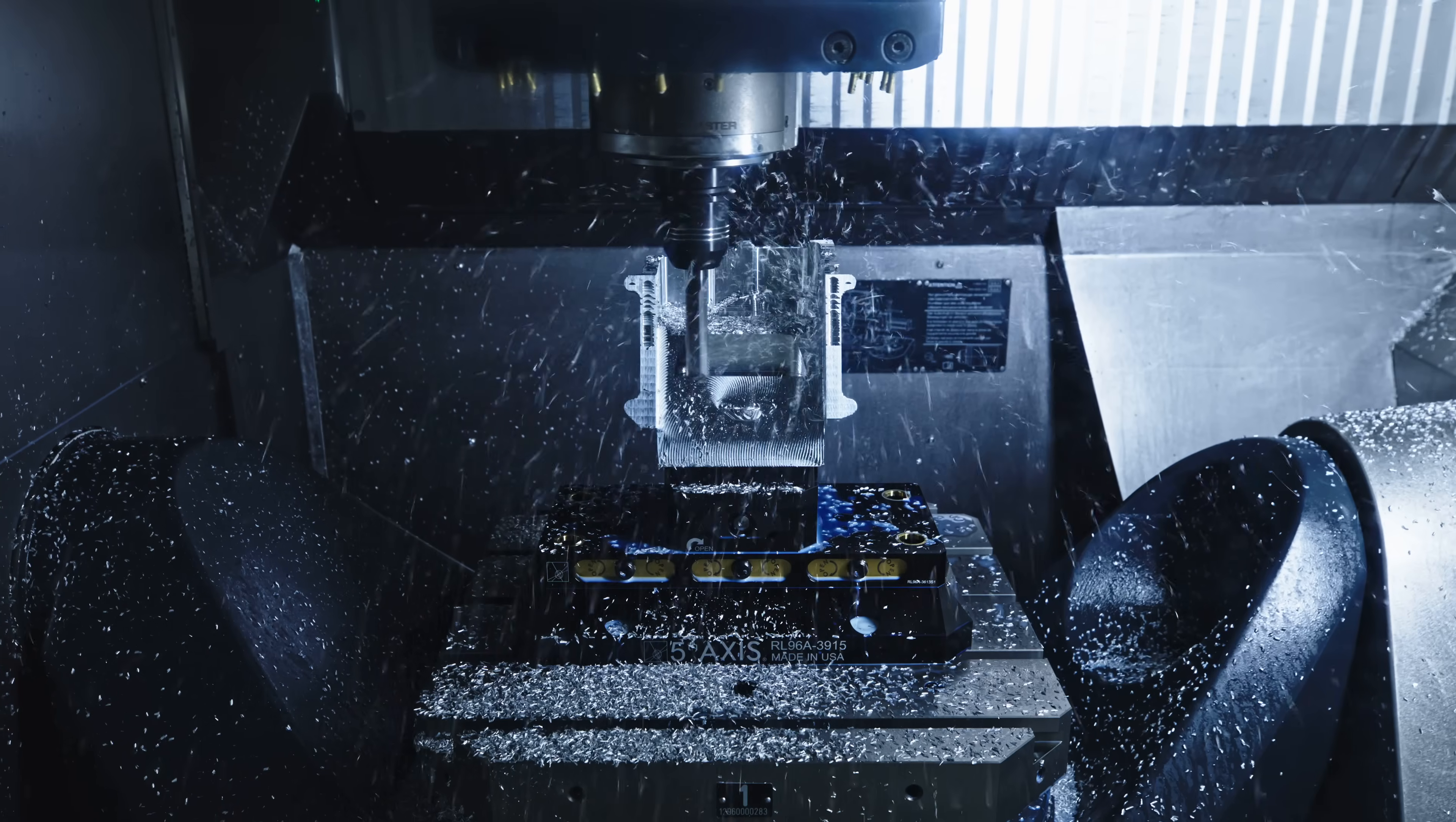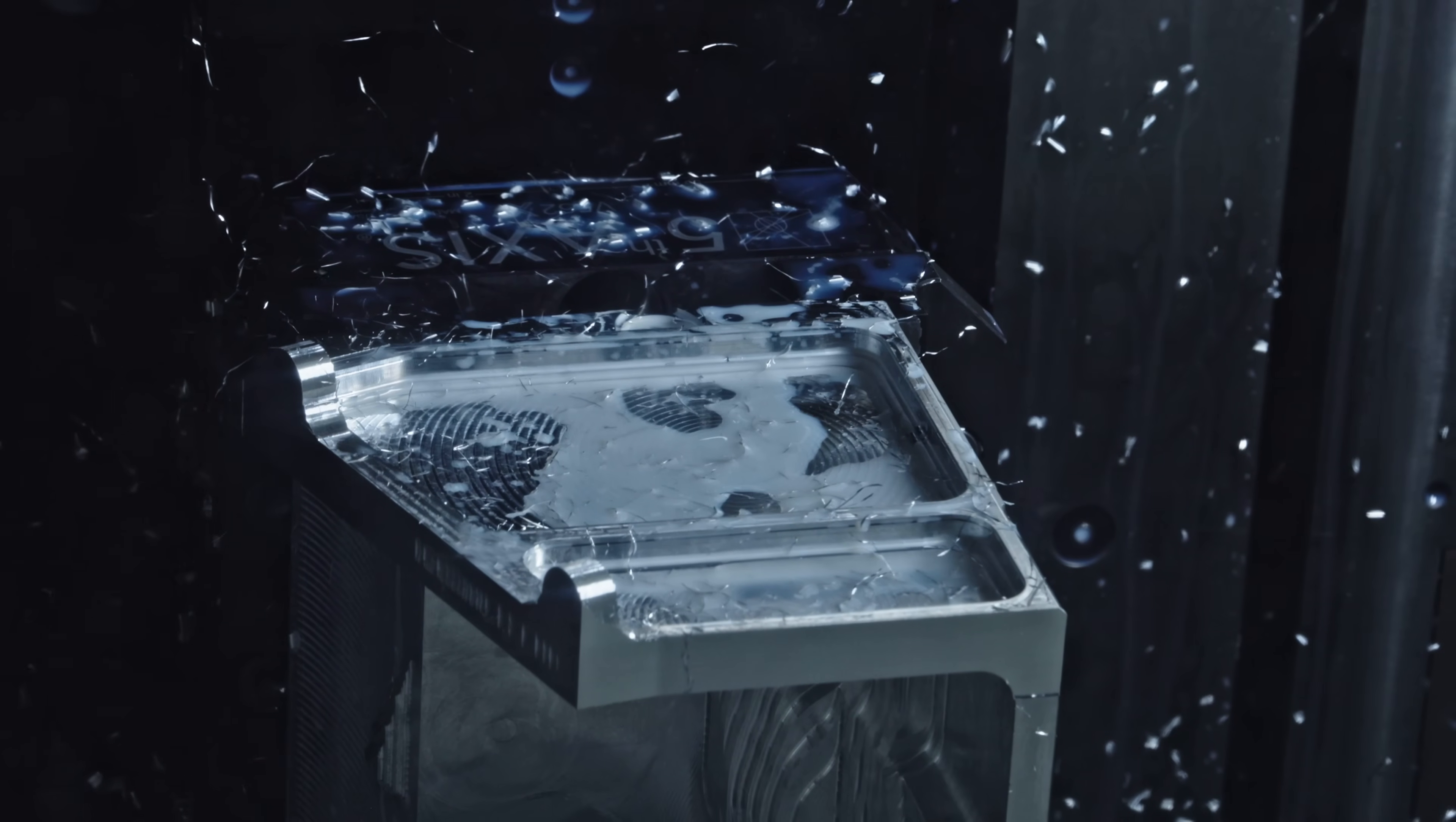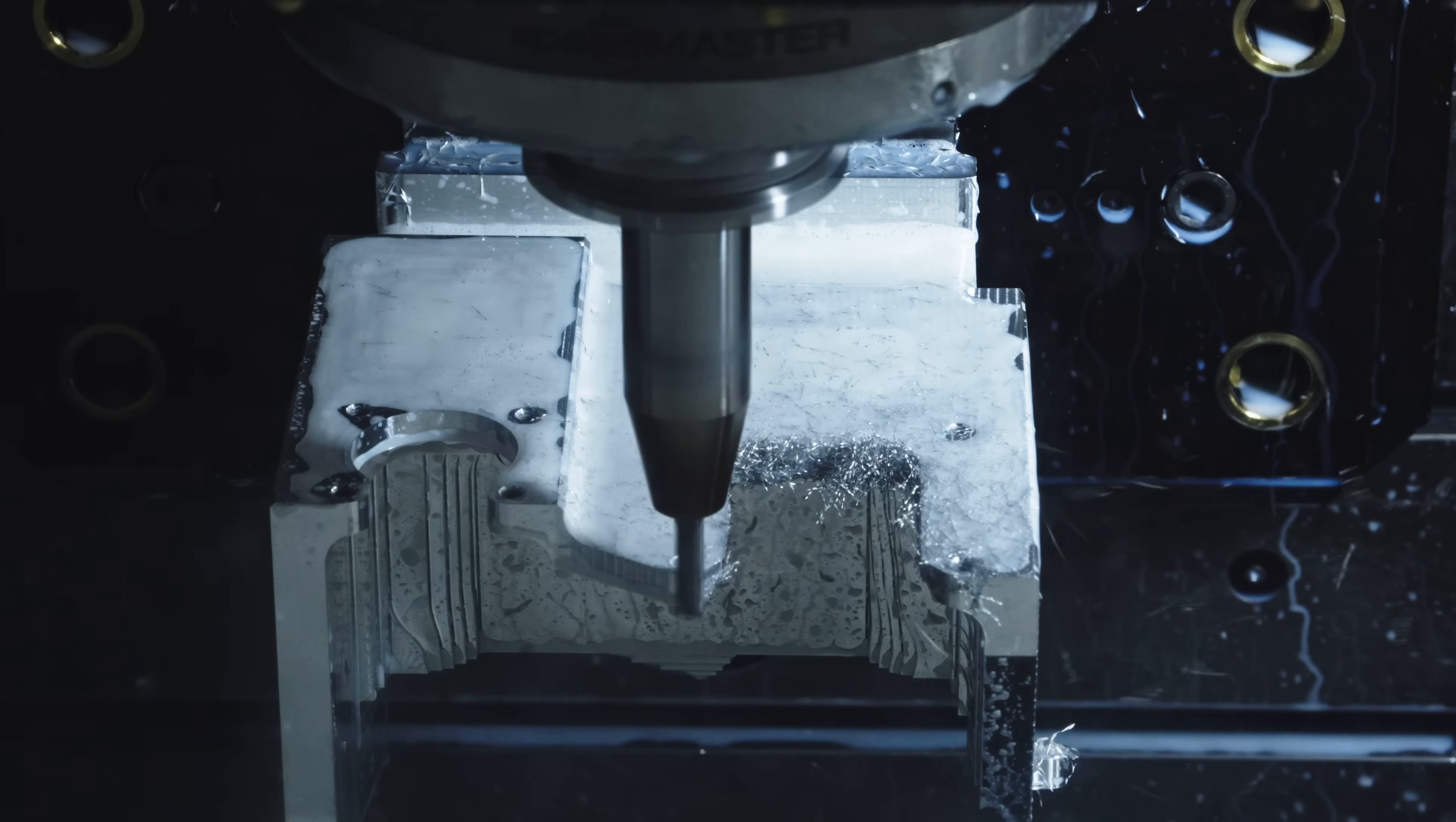Once the bulk of the material is removed, we move on to finishing all the features on the outside of the part. I'm especially careful during this stage, using multiple finishing passes to ensure these faces come out clean and consistent. After the outside surfaces are complete, we drill and tap several holes so we can move on to machining the inside of the part.